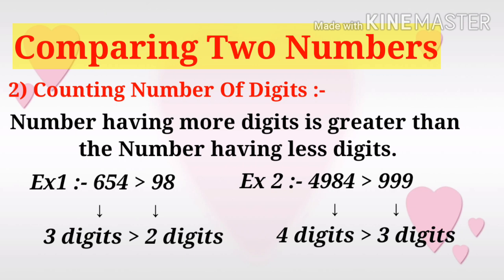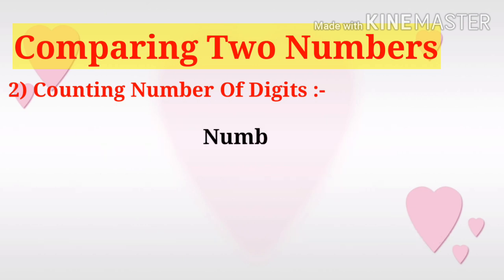Similarly, 4984 is greater than 999 because the left side number has four digits while the right side number has only three digits.